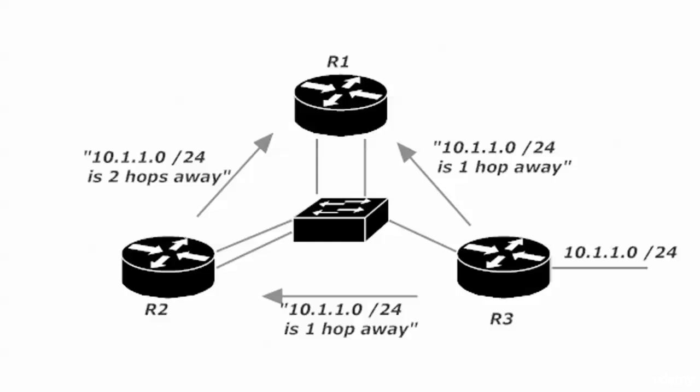So router 1 at this point is hearing about 10.1.1.0/24 from two different sources, and it's going to look at that and say, okay, that's the exact same route but the metric is different. It seems to be faster if I go through router 3 as opposed to through router 2. We love this situation because we'll take all the redundancy we can get. If router 1 loses one path to 10.1.1.0/24, it has another one.